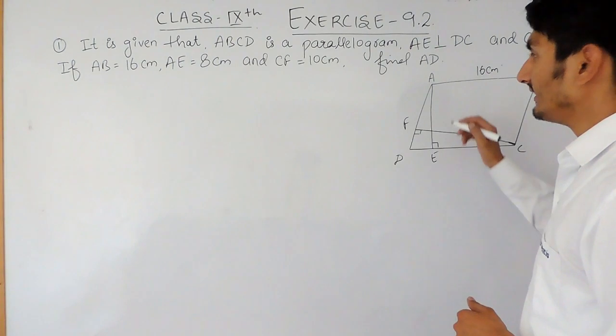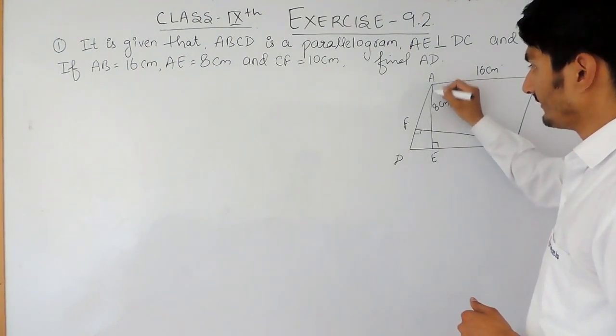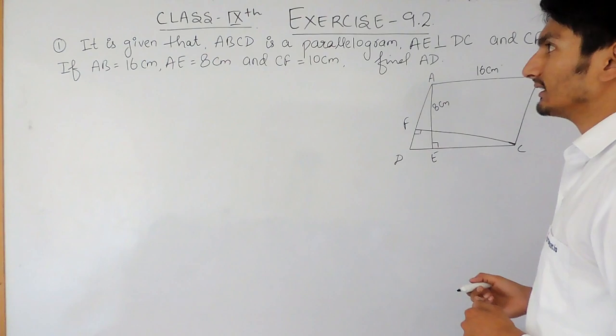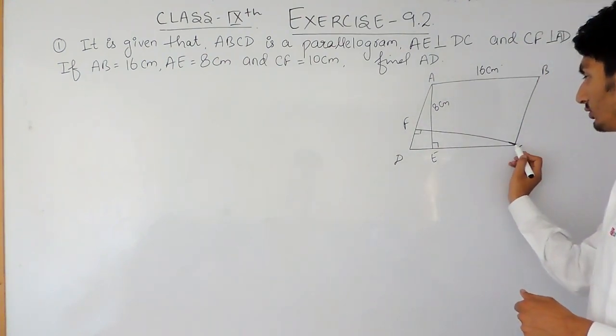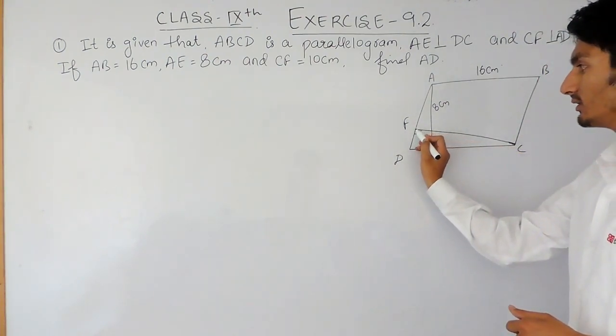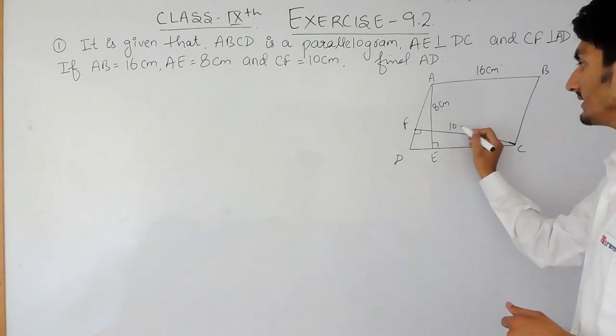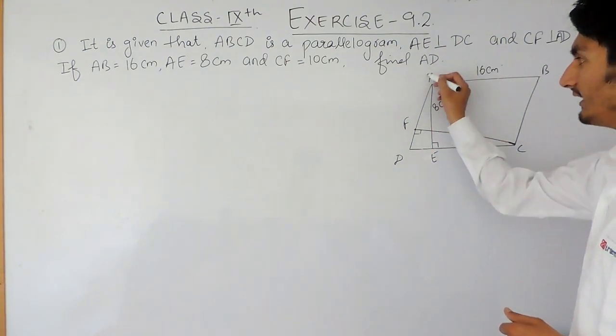The length of AE is equal to 8 cm. Okay, and the length of CF, the length from here till here is equal to 10 cm. You have to find the length of AD.